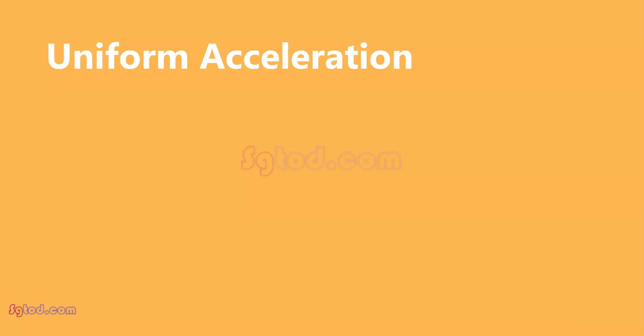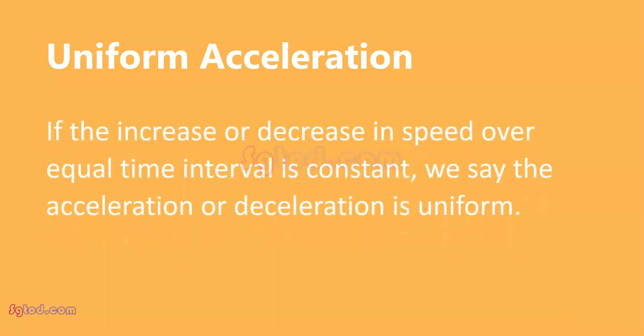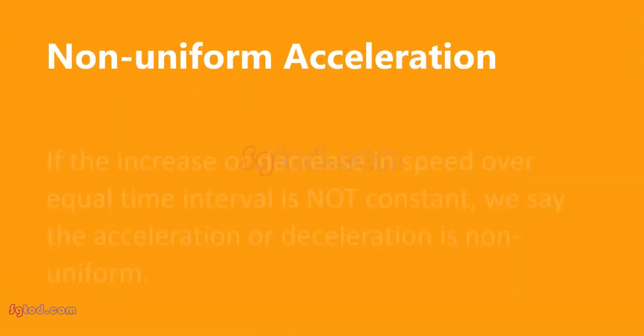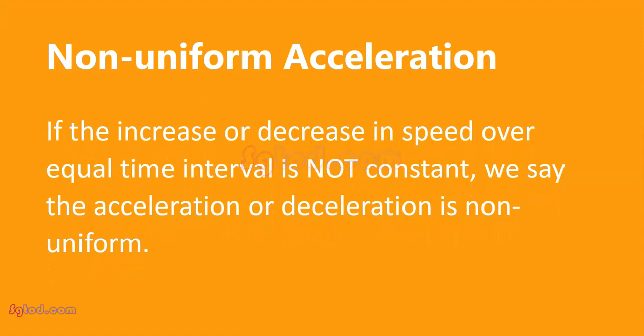When the increase or decrease in speed over equal time intervals is constant, we say that the acceleration or deceleration is uniform. But if the increase or decrease in speed over equal time intervals is not constant, we say that the acceleration or deceleration is non-uniform.